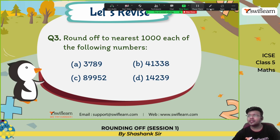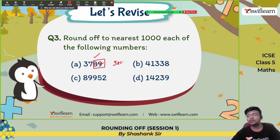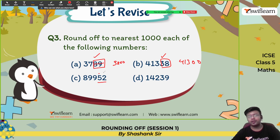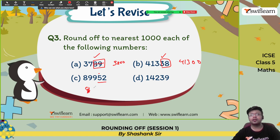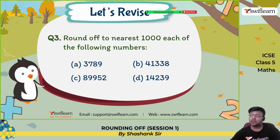Round off to the nearest hundreds. Check the tens digit — is it greater than 5? Yes, 8 is greater than 5, so the answer is 3800. For 413: less than 5, so 400. For 899: the tens digit is 9, add one — 9 plus 1 gives 900. For 1424: the answer is 1400. These are the answers for rounding to the nearest hundreds.